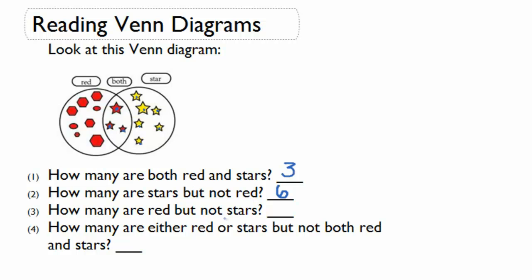How many are red but are not stars? Here we're going to count the items that are in this section of red but not in the overlap of red stars. So we have one, two, three, four, five, six, seven, eight. So we have eight items that are red but not stars.